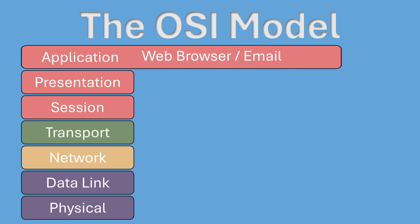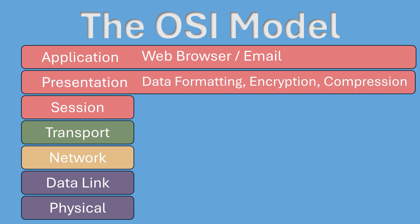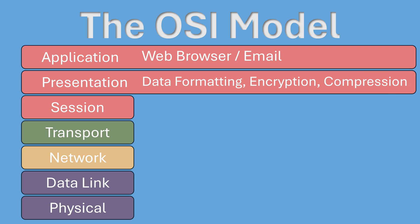Let's start at the top with the application layer. This is where network processes directly interact with end-user applications — for example, a web browser or email client operating at this layer. Just below that is the presentation layer, which translates data between applications and the network, handling things like encryption and compression.